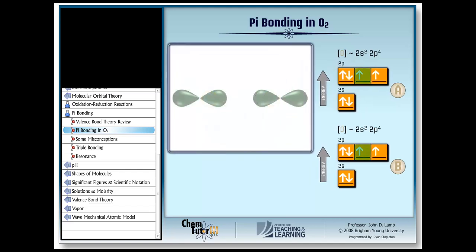First, we can line up these p orbitals on the oxygen atoms and bring them together end to end to overlap, like this. That's easy enough. And, in fact, when we do that, we end up with what kind of bond? That's right. It's a sigma bond.